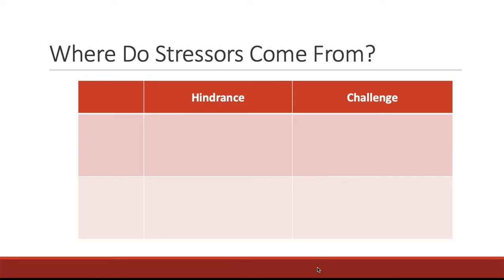Earlier in the module we described different types of stressors — those that are hindering or harmful, which are called hindrance stressors, and those that are motivating, which are called challenge stressors. These stressors can occur both in the workplace and outside of work. So we have a two-by-two framework with workplace hindrance, workplace challenge, non-work hindrance, and non-work challenge stressors. In this lecture we'll work through each type with examples.